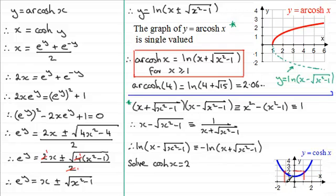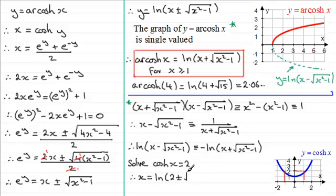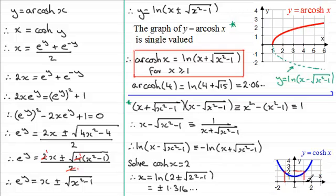That looks like just a little bit more than one and a bit less than minus one — two values. We can get that just by taking the inverse cosh of both sides. If we do, we end up with x equaling, using the formula, the natural log of 2 plus or minus the square root of 2 squared minus 1. If you work this out on your calculator, you find that you get plus or minus 1.316, and that would agree with what we've got on the graph.